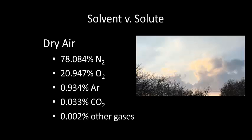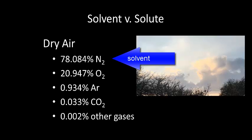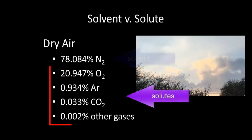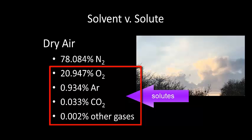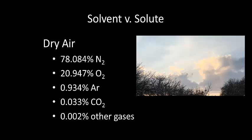The gas present in the highest amount is the solvent. In air, the solvent is nitrogen gas, because it is present in the highest amount. All the other gases are solutes. So notice that, although there can only be one solvent, there can be more than one solute.